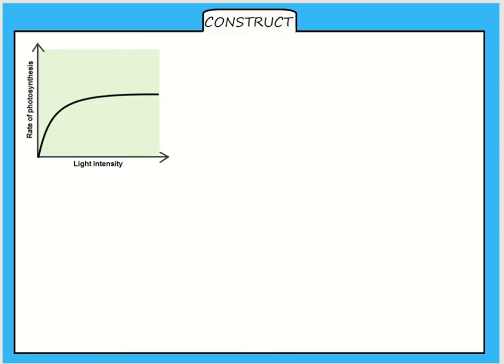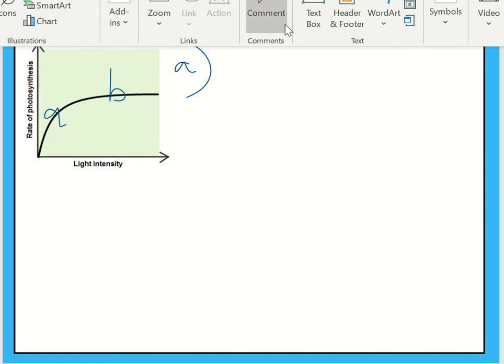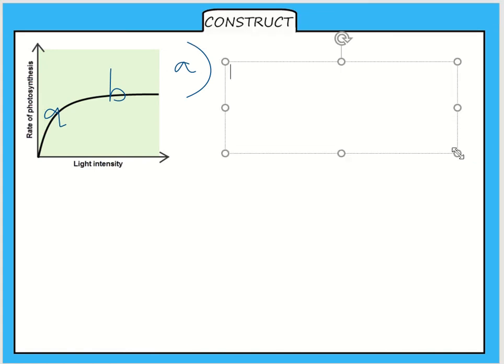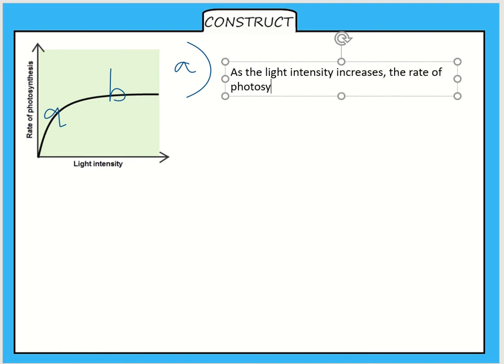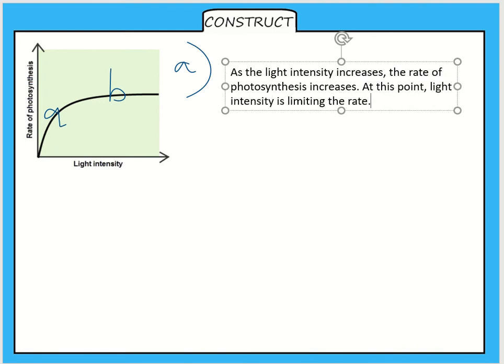What you could do is you could draw this graph out. If you've already done this in class you don't need to do it again, but you label it A and you label it B. At A we can say that as the light intensity increases, the rate of photosynthesis increases. This is the main trend. But what we also need to know here is at this point light intensity is limiting the rate.